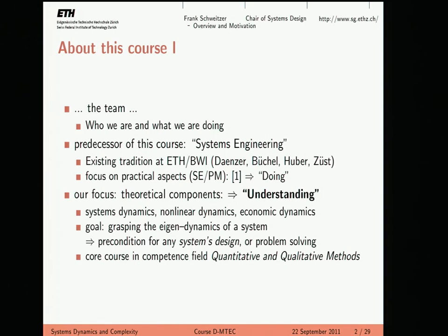What is our chair doing? We're basically doing research on social systems in general, financial systems. We have projects varying from modeling financial markets, through cyber emotions, modeling how users behave online, to emergence of cooperation, which is my project. We use a lot of agent-based modeling. You don't need to know what this means — you will have an idea at the end of this course what modeling means.